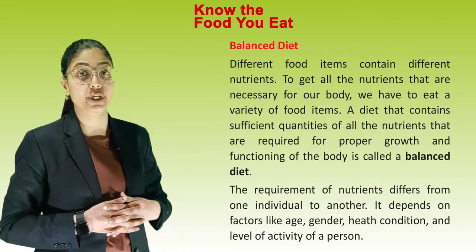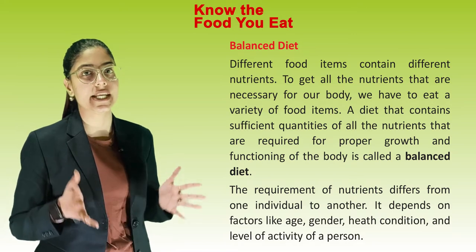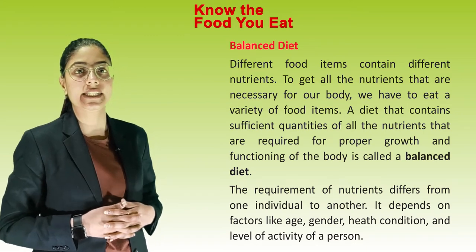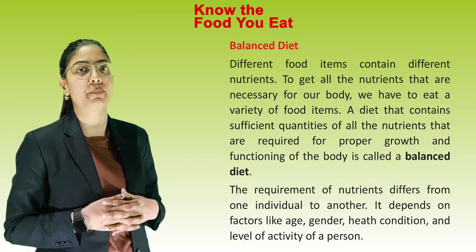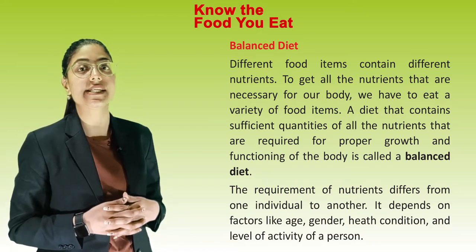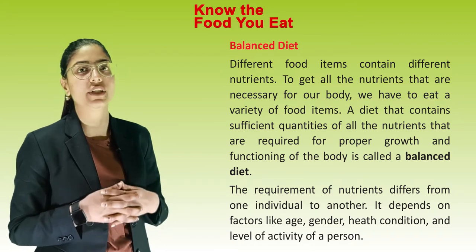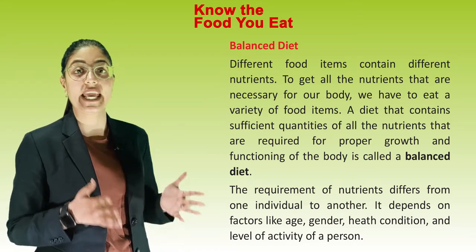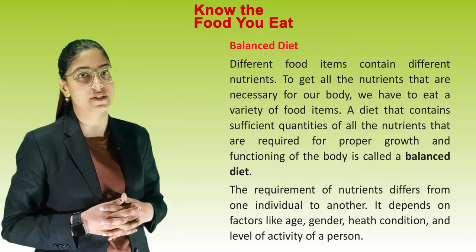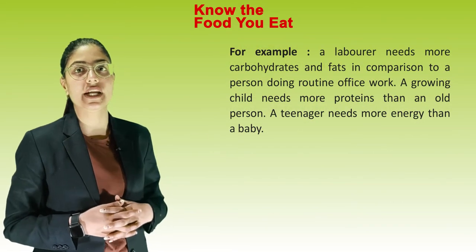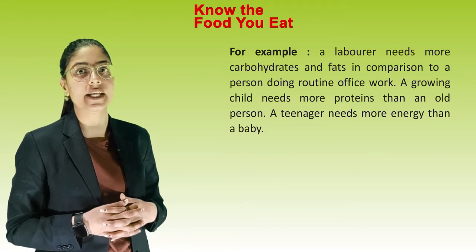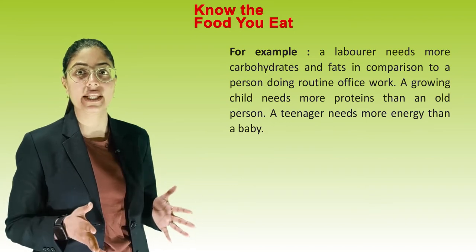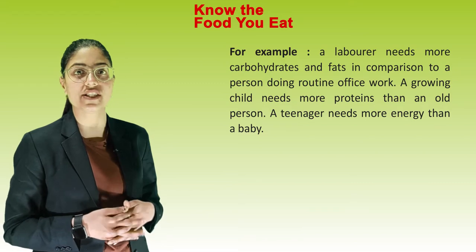Next topic is balanced diet. Different food items contain different nutrients. To get all the nutrients that are necessary for our body, we have to eat a variety of food items. A diet that contains sufficient quantities of all nutrients required for proper growth and functioning of the body is called a balanced diet. The requirement of nutrients differs from one individual to another depending on factors like age, gender, health conditions and level of activity. For example, a labourer needs more carbohydrates and fats than a person doing routine office work, a growing child needs more protein than an old person, and a teenager needs more energy than a baby.